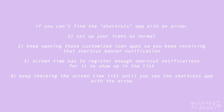Switch off the notifications. You might not find Shortcuts on the list because Screen Time hasn't registered that you're using Shortcuts enough to put it on the list. What you want to do is set up your icons as normal, then keep opening one of those customized shortcuts so you keep receiving that banner notification. Once Screen Time has had enough time to register the shortcut notifications, it should show up on the list. Keep checking until you see Shortcuts with the arrow in the notifications section.